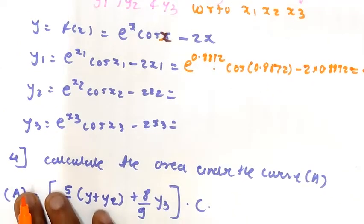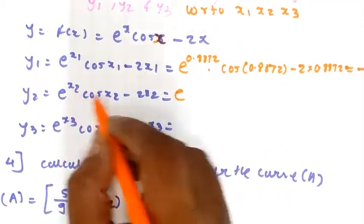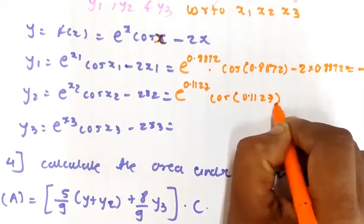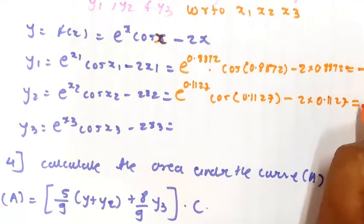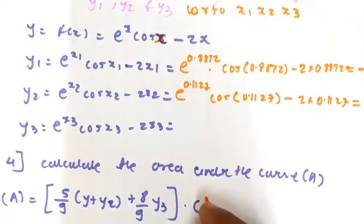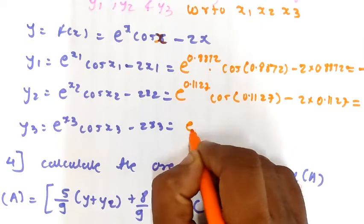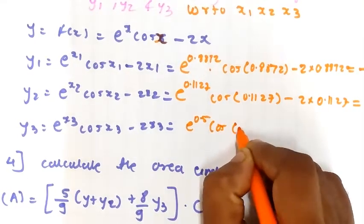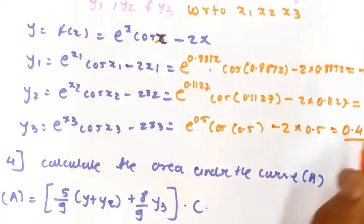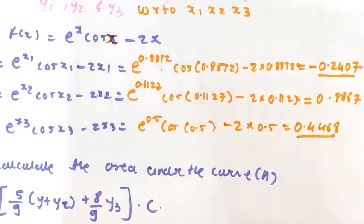Next, for y2, similarly put the x2 value. It will be e raised to 0.1127, cos 0.1127, minus 2 into 0.1127. Further simplifying, the value of y2 will be 0.8867. Similarly, for y3, put x3 as 0.5. It will be e raised to 0.5, cos 0.5, minus 2 into 0.5, which equals 0.4468. So we have found out the values of y1, y2, y3 corresponding to x1, x2, x3.